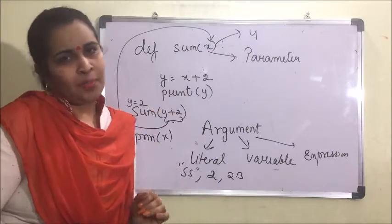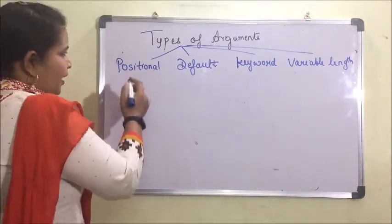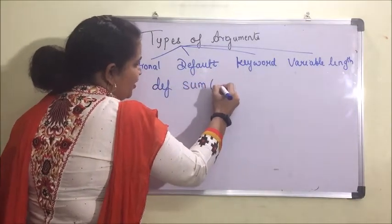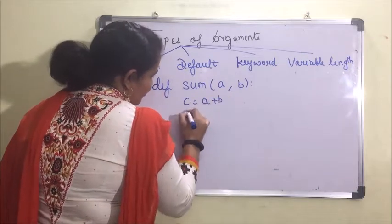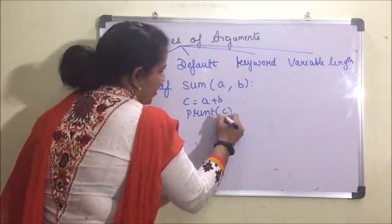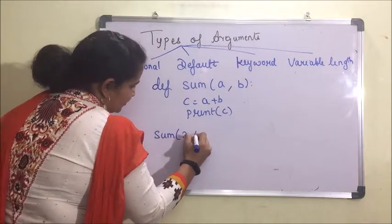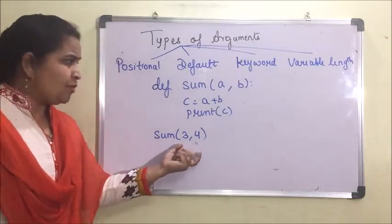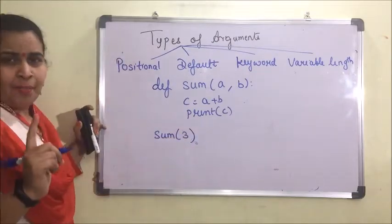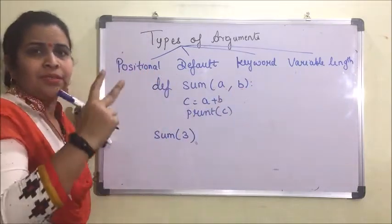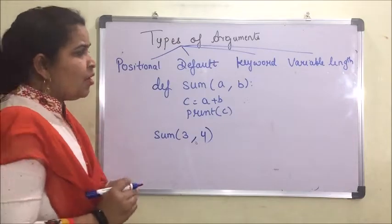The value being sent is the argument and the value being received is the parameter. Now I'll show a small program to demonstrate how arguments and parameters work. The first type is the positional argument. In positional arguments, suppose we have a function sum — we can have multiple arguments and multiple parameters. The number of arguments should always match the number of parameters. If we pass only one argument but there are two parameters, it will generate an error.